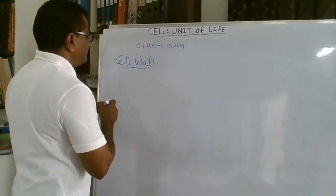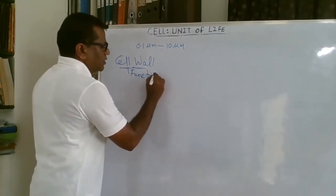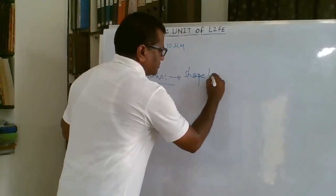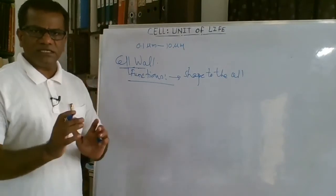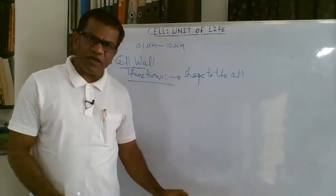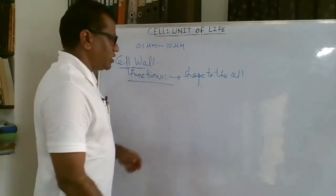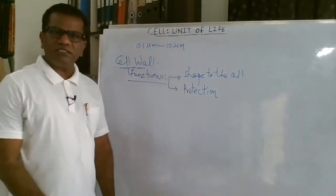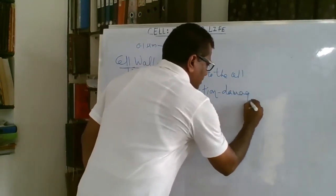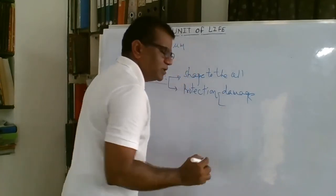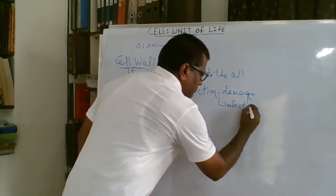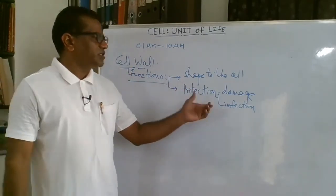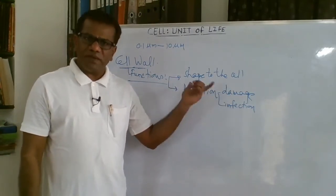Coming to the functions of the cell wall: the cell wall gives shape to the cell — all plant and fungal cells have a typical rigid and tough shape due to the cell wall. It also provides protection — it protects the cells from damage, from pests, from infection, from heat, from desiccation, and from any type of damage or infection.